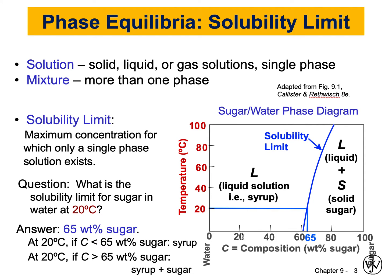So, as we mentioned in the last video, we would like to study the phase diagrams by looking at temperature, composition, and pressure. We're assuming that everything here is at the same pressure. The solubility limit is defined as the maximum concentration for which only a single phase solution exists. In this diagram here, this is our solubility limit — this curve here. And this limit and curve is experimental.